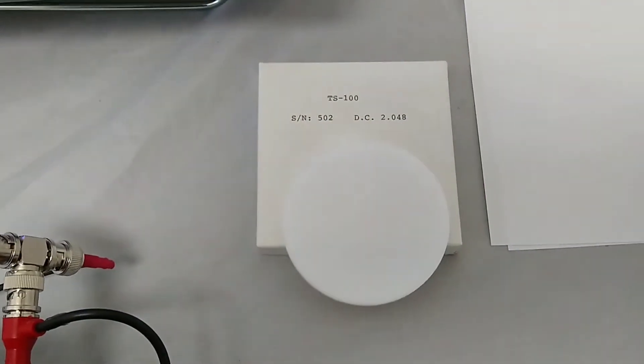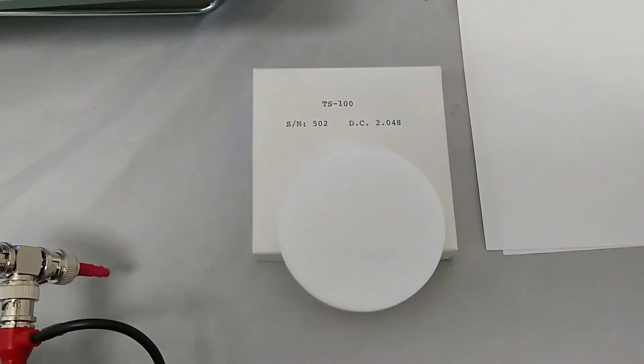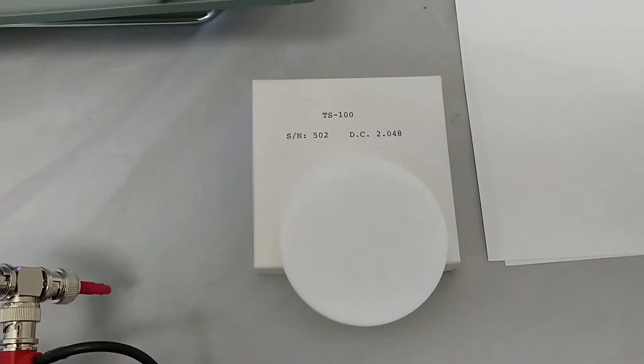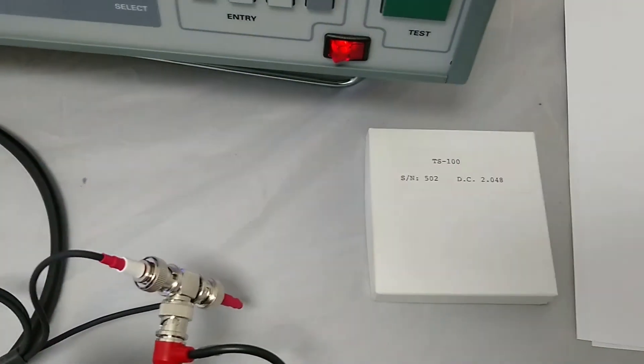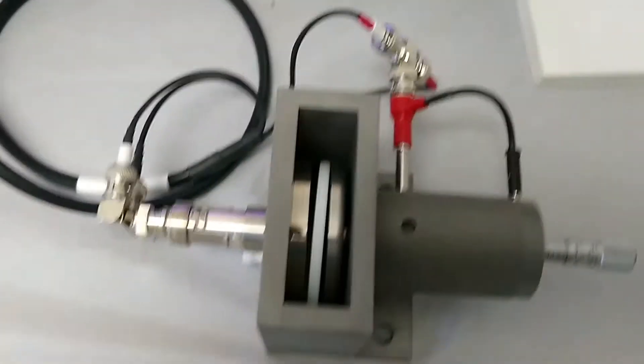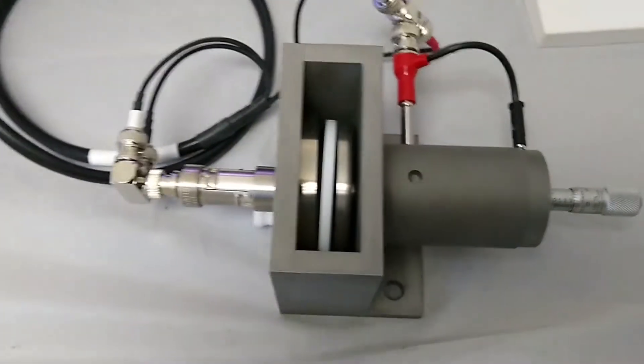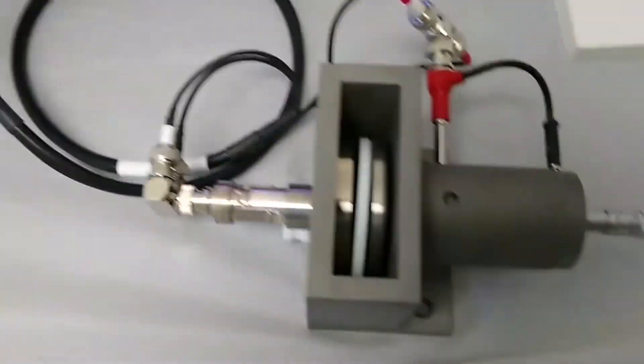We happen to have also the optional TS100, which is a Teflon standard, has a known dielectric constant, in this case 2.048. We can then take the Teflon standard, place it in the sample holder, so it's now in the sample holder.